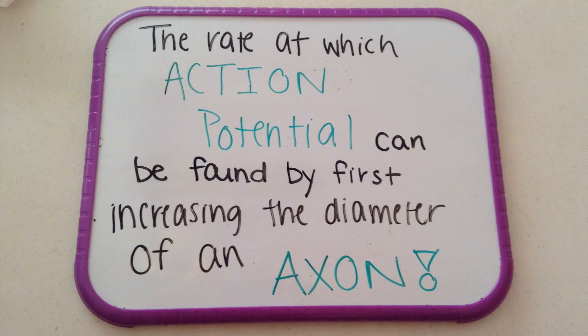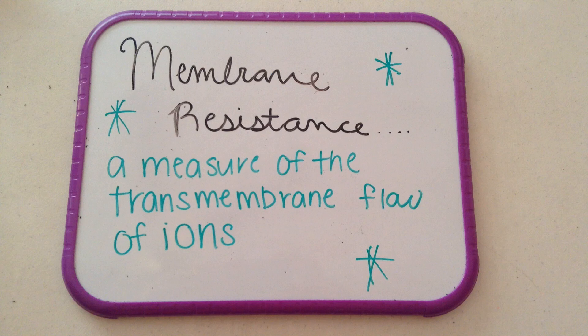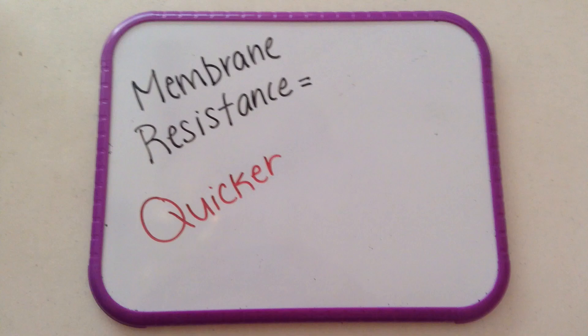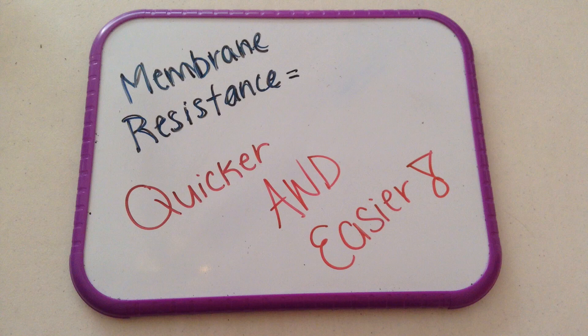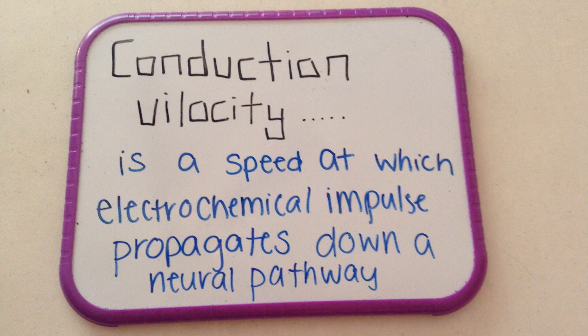The rate at which action potential propagation occurs can be found by first increasing the diameter of an axon. When this happens, the membrane resistance, which is a measure of the transmembrane flow of ions, decreases, making everything pass through quicker and easier. Because of the increase in action potential, conduction velocity, which is the speed at which an electrochemical impulse propagates in a neuron pathway, explains why bigger axons are faster than slower ones.